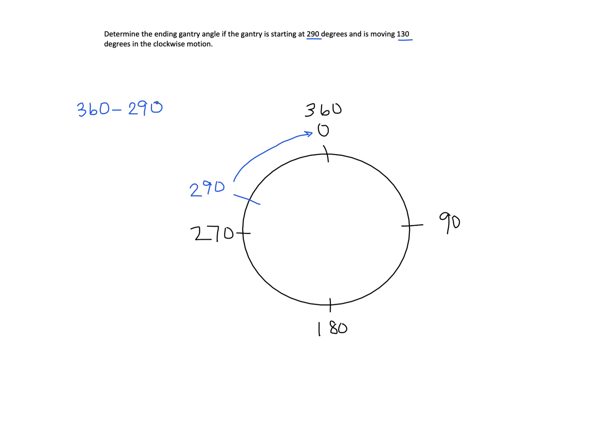So 360 minus 290 comes to 70 degrees. So that means from the starting point to the top the gantry rotated 70 degrees.